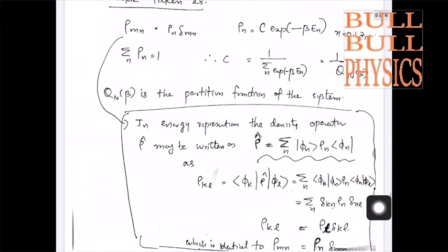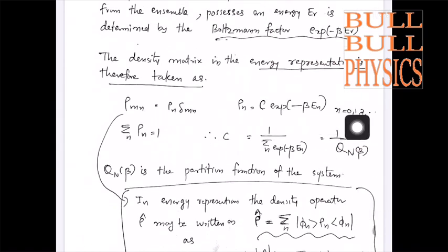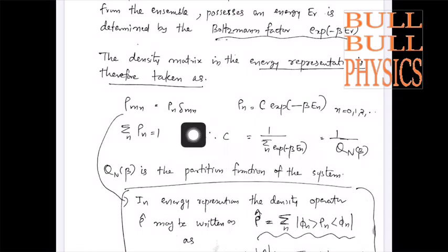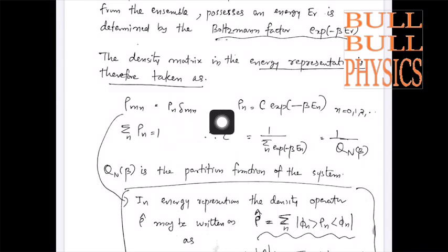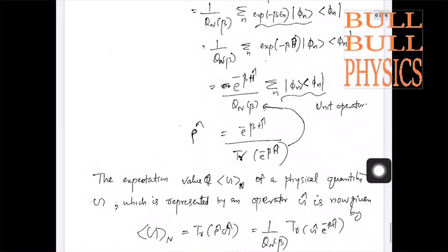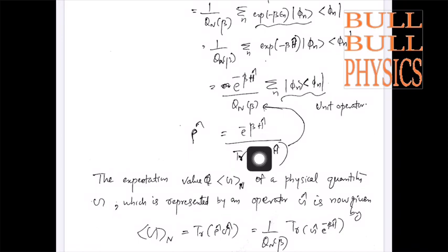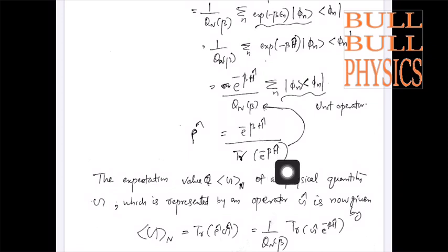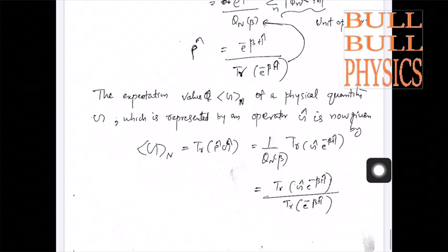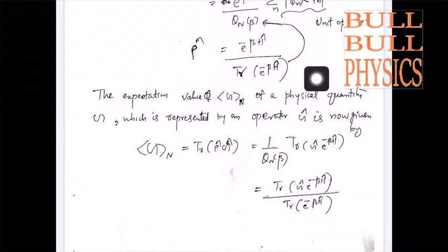Q_N(β) is Σ_n exp(-β E_n), which is actually the trace of the matrix — the trace of exp(-β H). So we have ρ = exp(-β H) divided by Tr[exp(-β H)], and Q_N(β) is the trace of exp(-β H). So in the canonical ensemble, we represent ρ in this form.